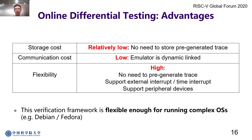The advantages of using the online differential testing framework include: first, there is no need to pre-generate traces, and as a result no need to store them. Second, the emulator is dynamically linked into the verification framework, which reduces communication cost. Finally, external interrupts, timer interrupts, and peripheral device-related operations are all supported in simulation verification. These features make our verification framework flexible enough to run complex operating systems like Debian.